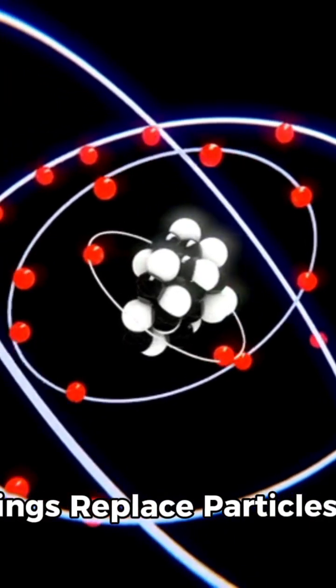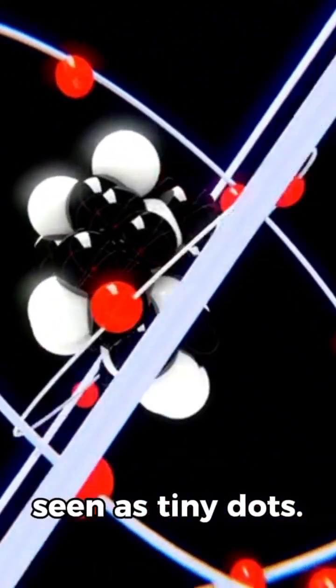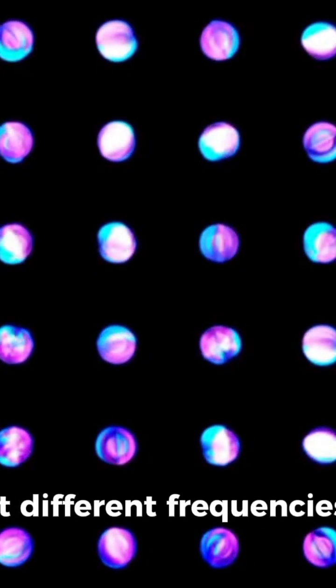Two: Strings replace particles. In traditional physics, particles like protons and electrons are seen as tiny dots. In string theory, these dots are replaced by strings that vibrate at different frequencies.